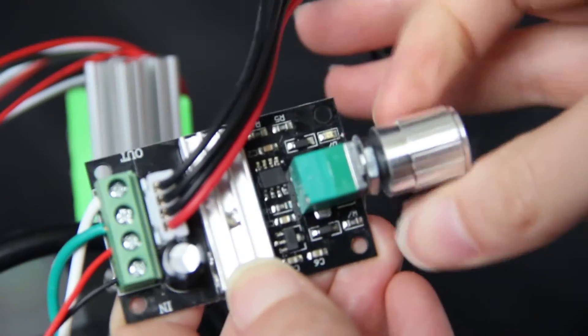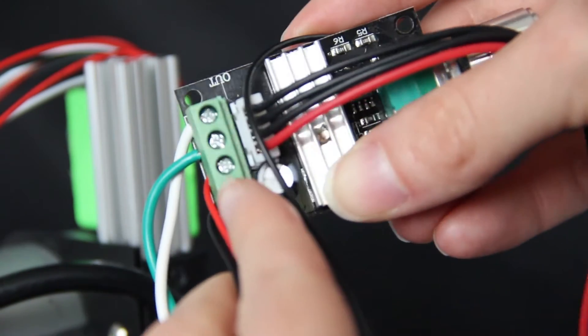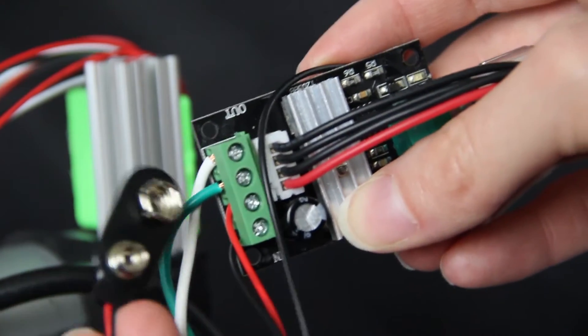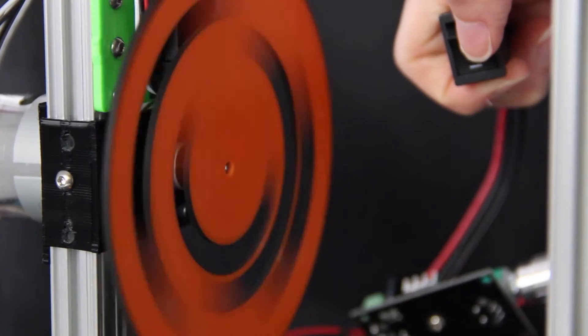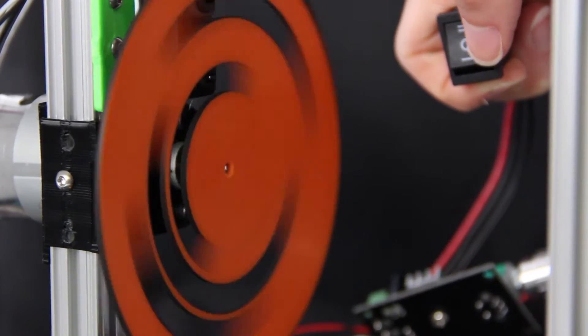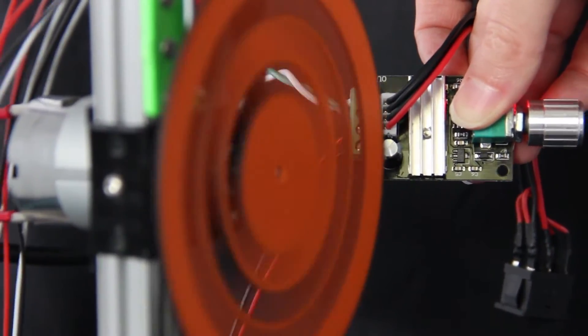We wanted to use a motor controller so we could adjust the speed. Two wires go to the motor and two go to the 9V battery. The switch allows us to change the direction of the motor. We can go clockwise or counterclockwise, and the knob allows us to adjust the speed.